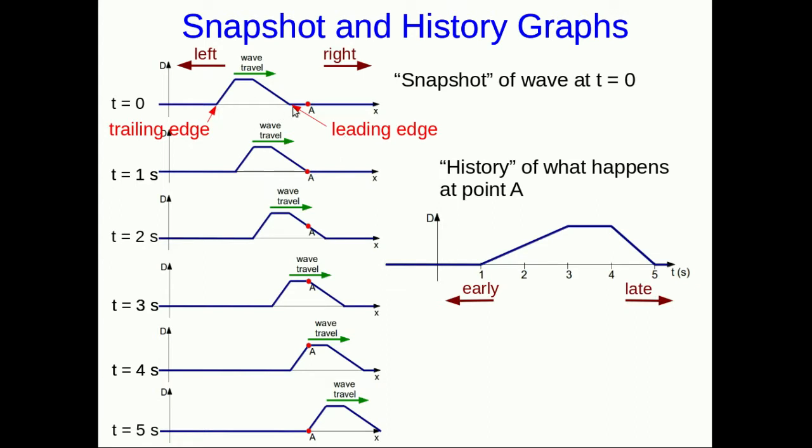It's useful to note that any wave traveling along has a leading edge and a trailing edge. Because this wave is traveling to the right, the right edge of the wave is its leading edge. Notice that the history graph is the same shape as the snapshot graph except it's flipped right to left. They each have a shallow slope and steep slope, but in one the steep slope is on the right and in the other it's on the left. But it's not always that way. We'll see a case in a moment where they're not flipped right to left.